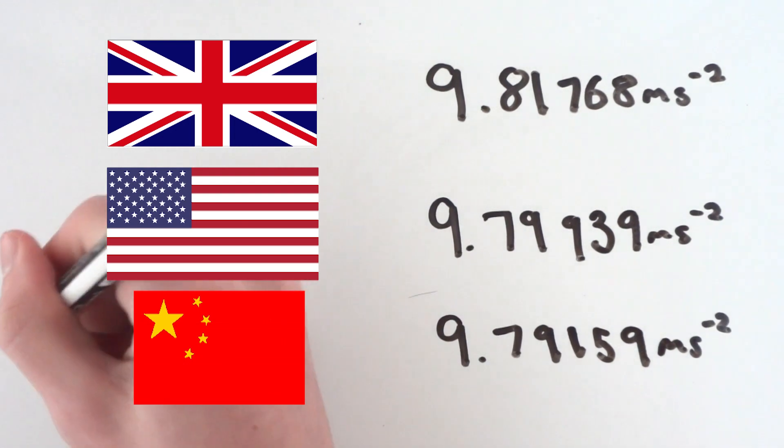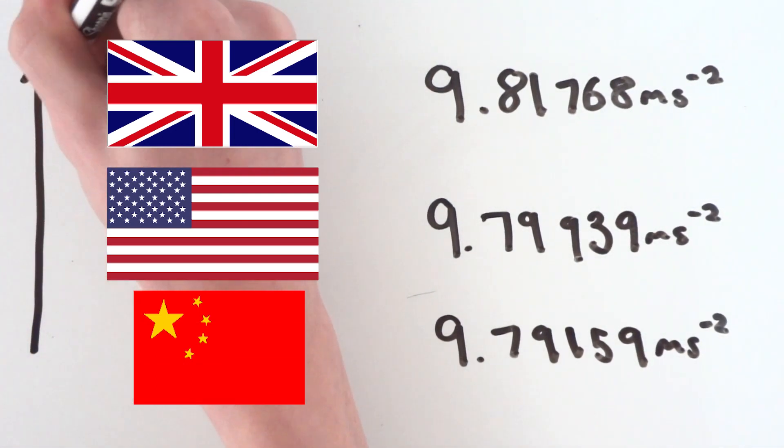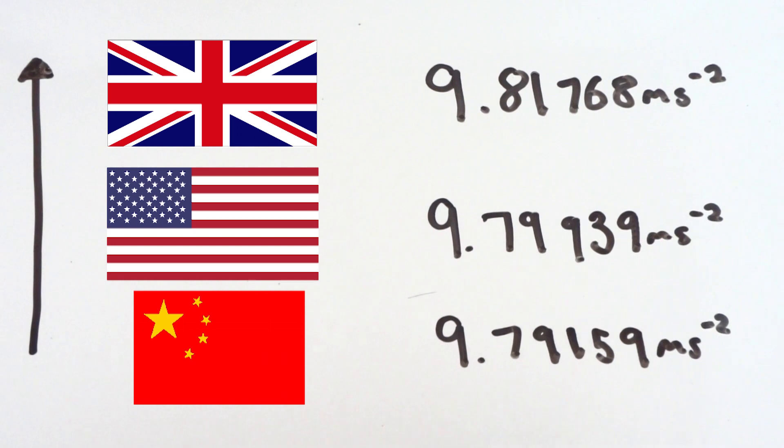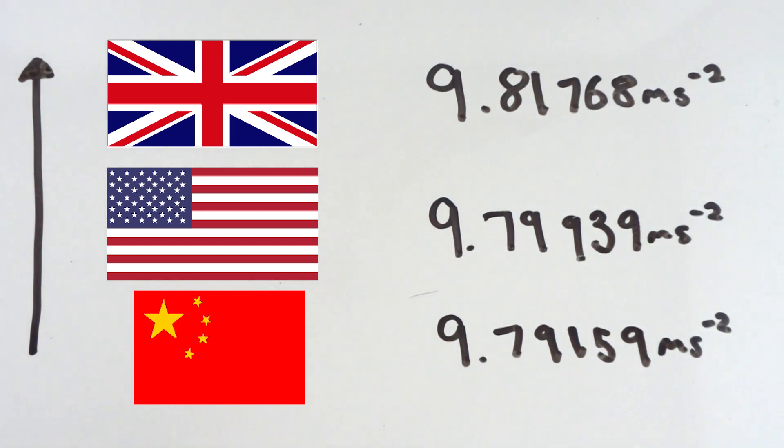You begin to realize that the gravitational field strength is higher in some countries and lower in others. This is mostly due to some countries being higher above sea level than others. The higher you are in altitude, the lower the gravitational field strength will be.